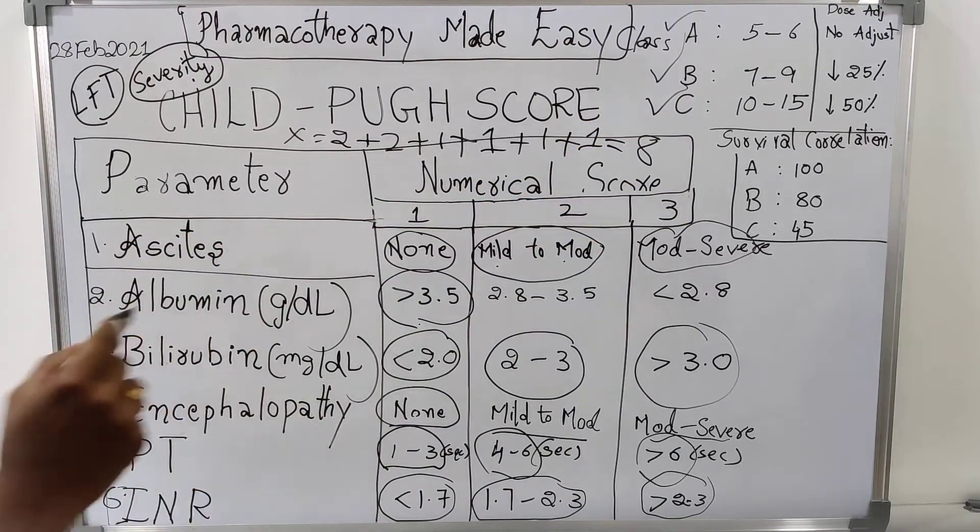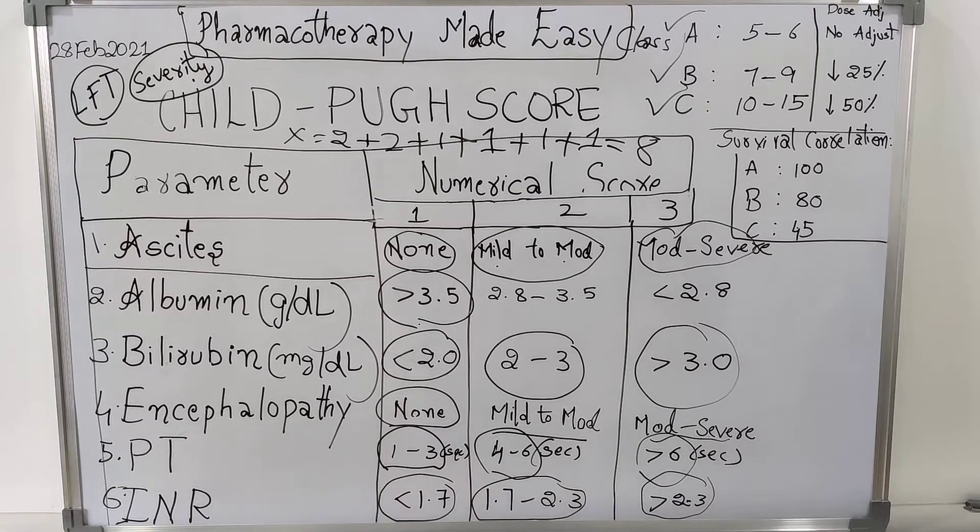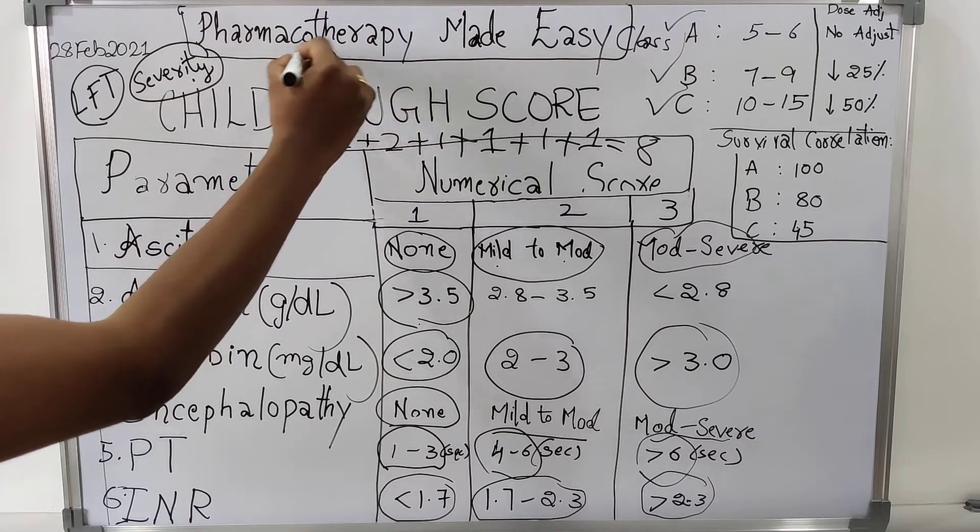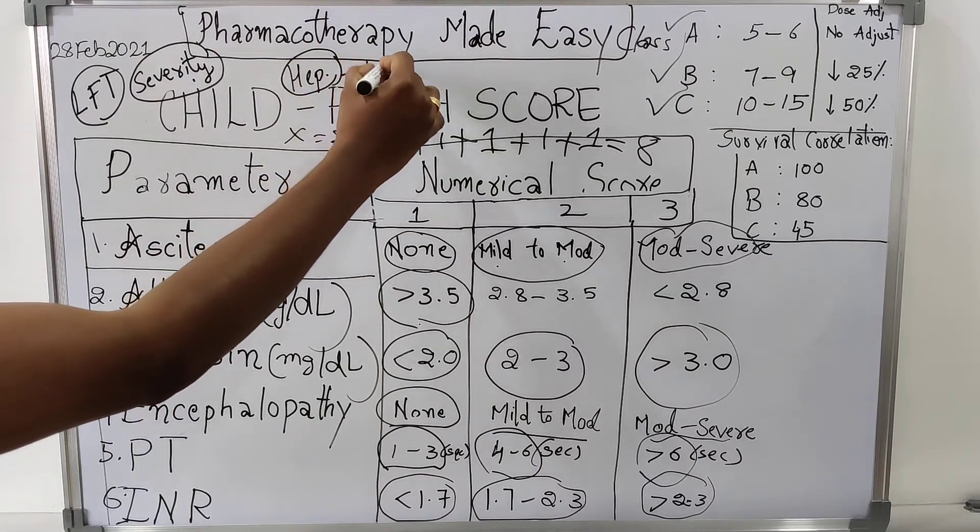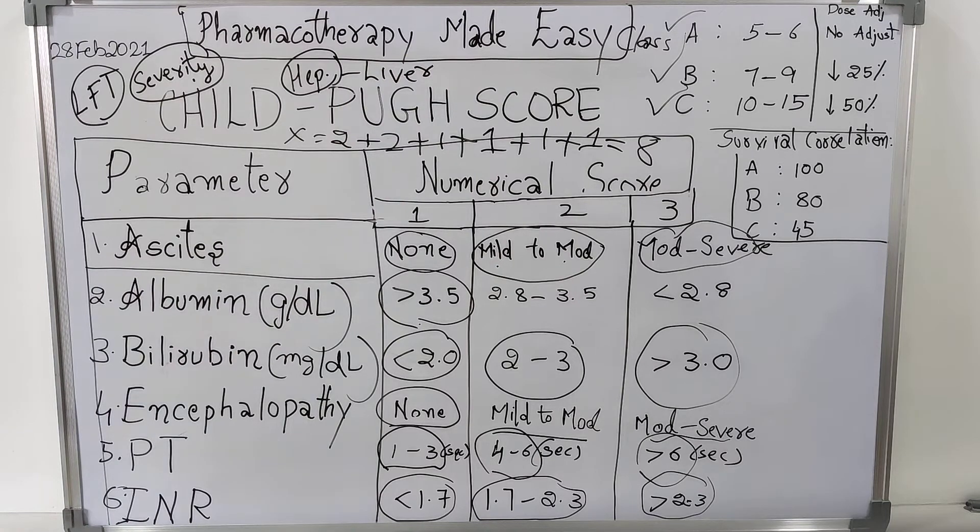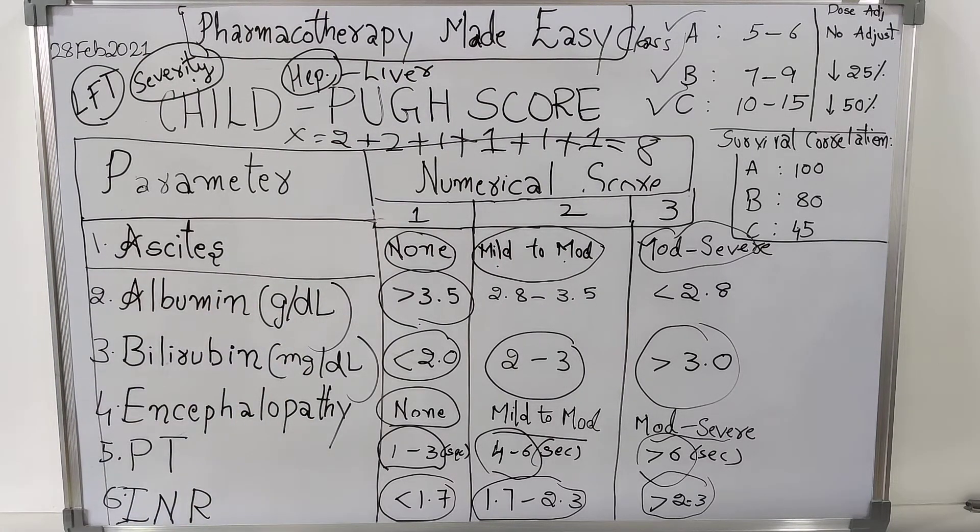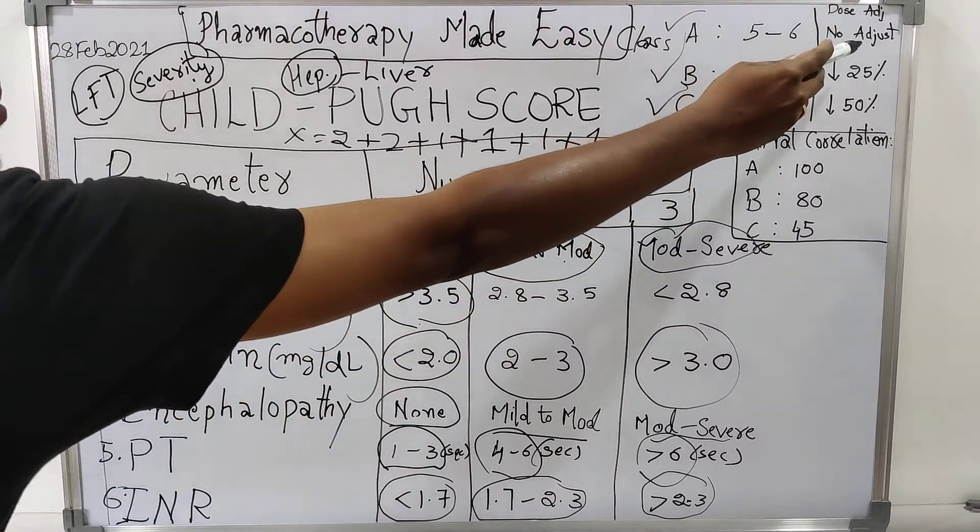What is this useful for? Based on the score obtained, it will be useful to adjust the dose in the patient. Dose of those drugs which are eliminated through hepatic route must be decreased based on the score given. If the patient is having score of 5 to 6, he will come under class A, and there is no need for dose adjustment.